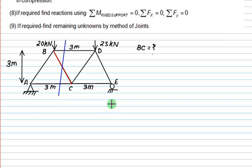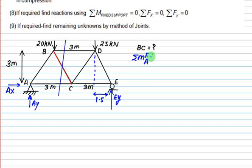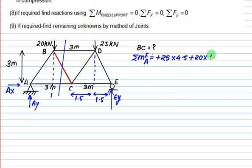As we proceed, we will find out the reactions. Let this reaction be EY. By similar triangles, the distance is 1.5. The 25 kN load has a moment arm of 1.5, and the other 25 kN load has a moment arm of 3, giving a total distance of 4.5. Reaction AY acts anticlockwise with a distance of 6. From these conditions you can find out the value of EY.